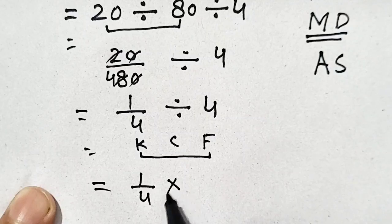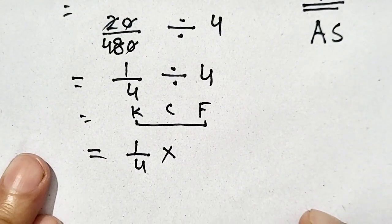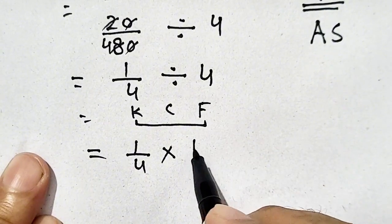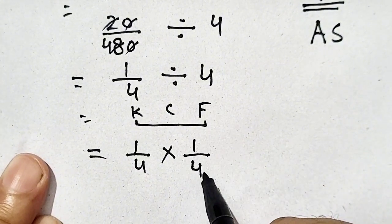C means change - divide is changed into multiplication. And F means flip. So we have to flip 4, it will be 1 by 4.